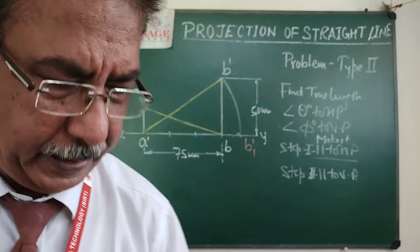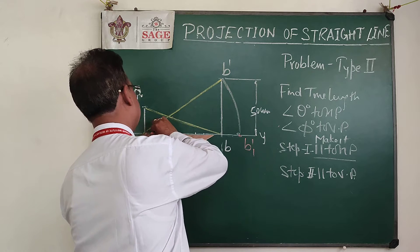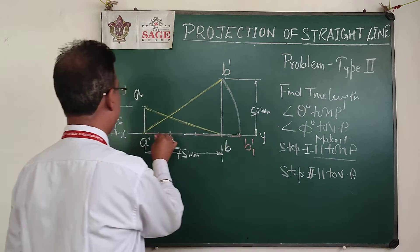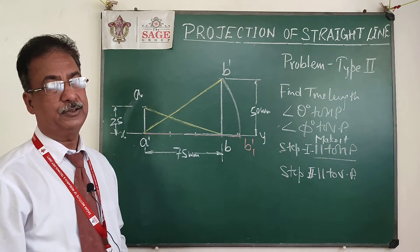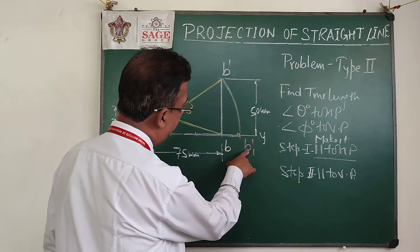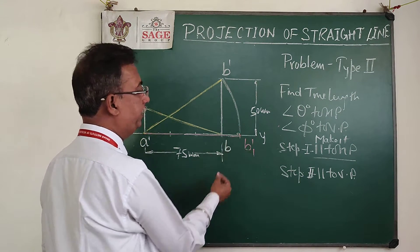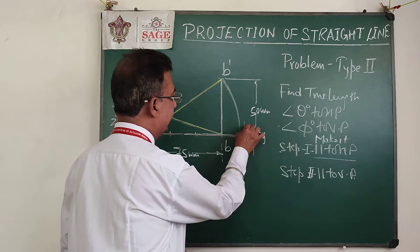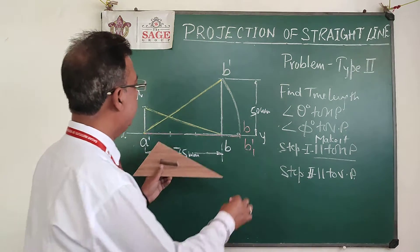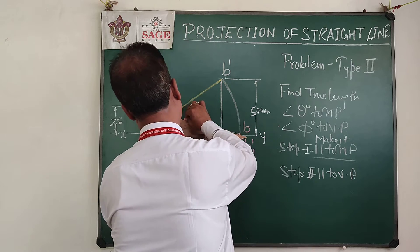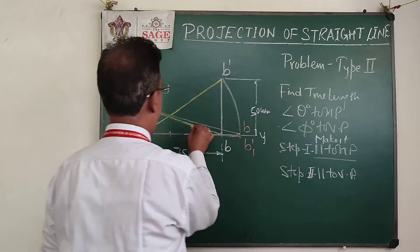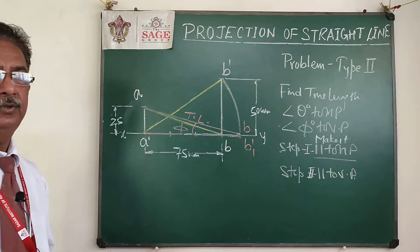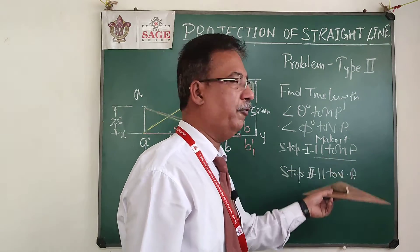The line A dash B one dash is now on the HP. Whenever a line is on the HP, its top view shows the true length. The top view of B one will be on the XY line at the same point B. Joining B with A gives the true length, and this angle will be phi.